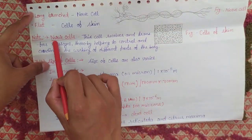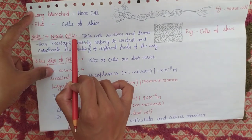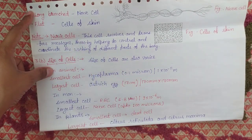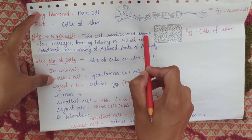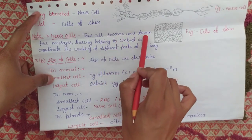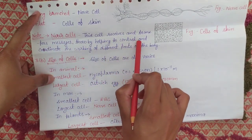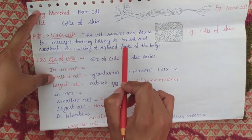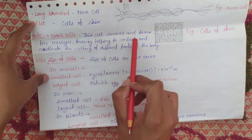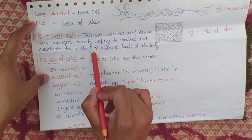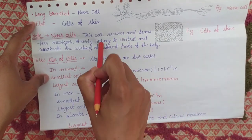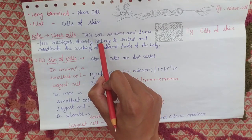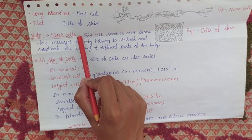Now there is a note about nerve cells. What is the work of nerve cells? First, nerve cells are present in our brain. They receive and send signals from our entire body. This cell receives and transfers messages, thereby helping to control and coordinate the working of different parts of the body. Any signal in our body that has to reach the brain is carried by nerve cells.